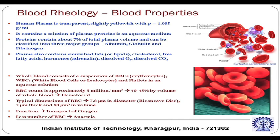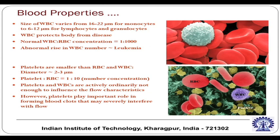These discs are typically 2 micron thick and 88 micron cube in volume. Their function is transport of oxygen, and a lesser number of RBCs will lead to a disease called anemia. The size of WBC is significantly larger — 16 to 22 micron for monocytes — but much reduced for lymphocytes and granulocytes, which are different types of WBCs.